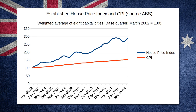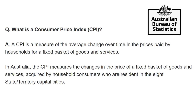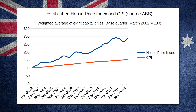The blue line represents the weighted average of the house price indexes of Australia's eight capital cities, using the latest data from the Australian Bureau of Statistics. The red line represents the CPI, the Consumer Price Index. According to the ABS, the CPI measures the average change over time of the prices paid by consumers for a fixed basket of goods and services — essentially a measure of inflation. CPI also only represents residents in Australia's eight capital cities, so this graph is valid — it's comparing apples with apples. House prices have been going up at a much greater rate than inflation.